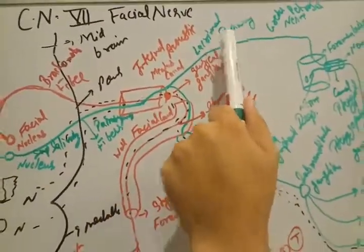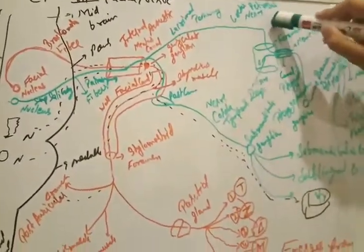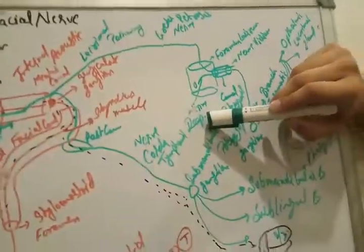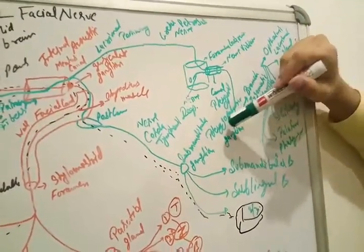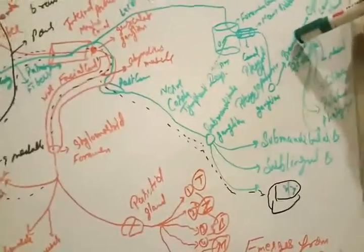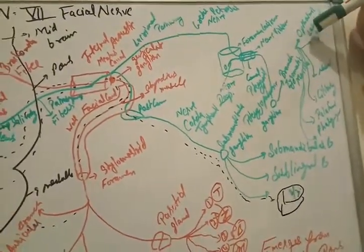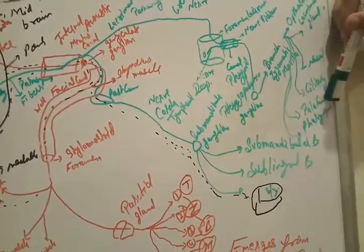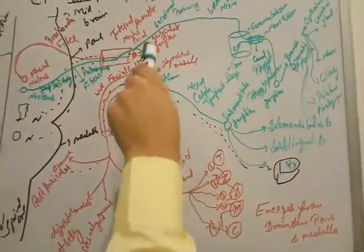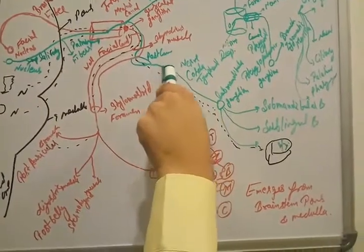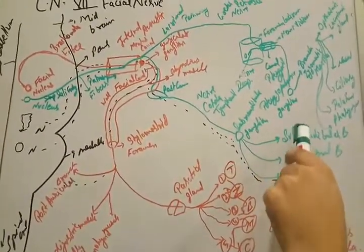To repeat the superior salivatory nucleus: parasympathetic fibers enter the internal acoustic meatus, pass through the geniculate ganglion, and split two ways. The lacrimal pathway: greater petrosal nerve → foramen lacerum → deep petrosal nerve joins → pterygoid canal (vidian nerve) → pterygopalatine ganglion → zygomatic/maxillary/ophthalmic branches → lacrimal, nasal, ciliary, palatine, and pharyngeal glands. The submandibular pathway: posterior tympanic canal → chorda tympani → submandibular ganglion → submandibular, sublingual, and two-thirds of tongue.